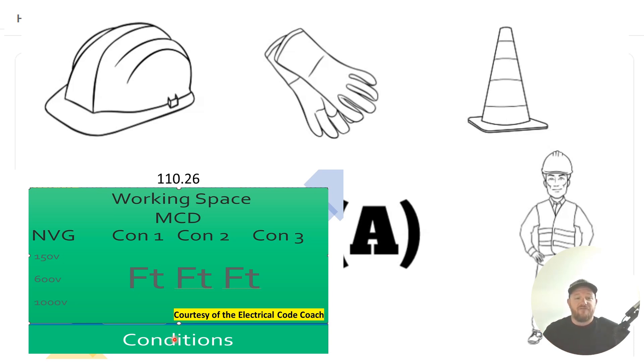So this one, we need to first come to our nominal voltage, which is the middle column. Then we slide all the way over to condition three. And that's where we're going to find this four-foot requirement.